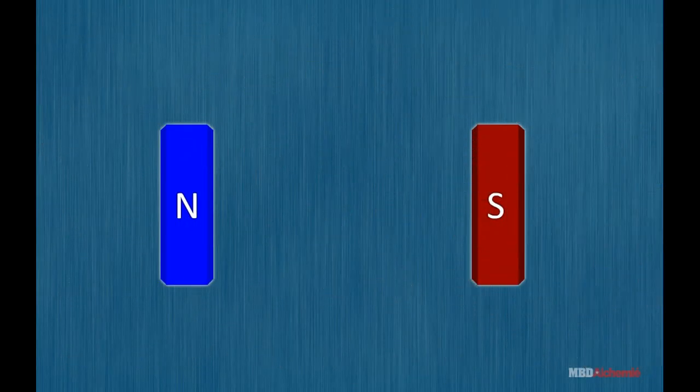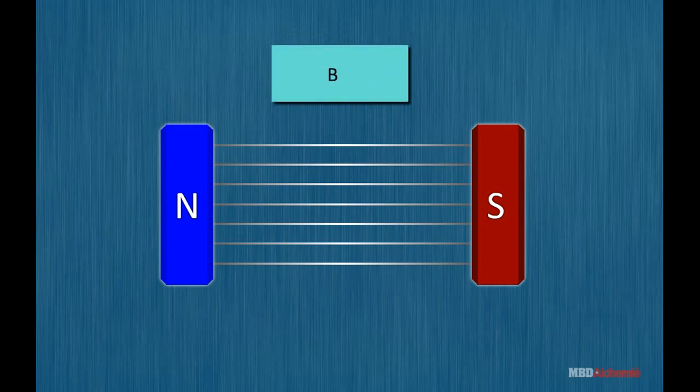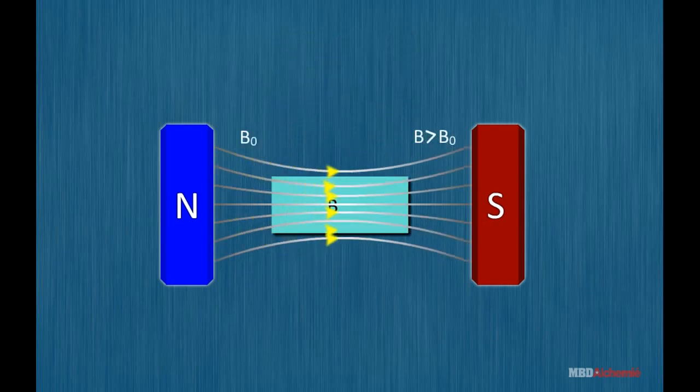When a paramagnetic substance is placed in a magnetic field, the magnetic field lines prefer to pass through the substance. It shows that the magnetic induction inside the sample is greater than the magnetic induction outside the sample.